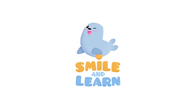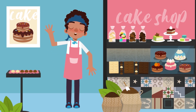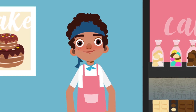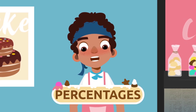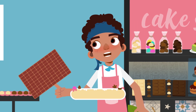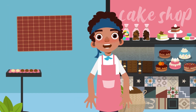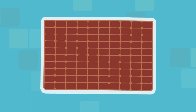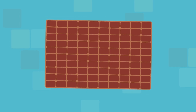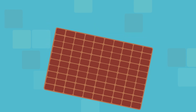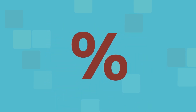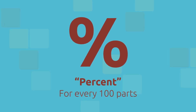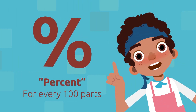Hello friends, welcome to my pastry shop! Today we're going to learn how to calculate percentages. A percentage is an amount expressed as a number of parts of something divided into 100 parts. The symbol we use to indicate percentage is the % sign, and we read it as 'percent,' which means for every 100 parts.